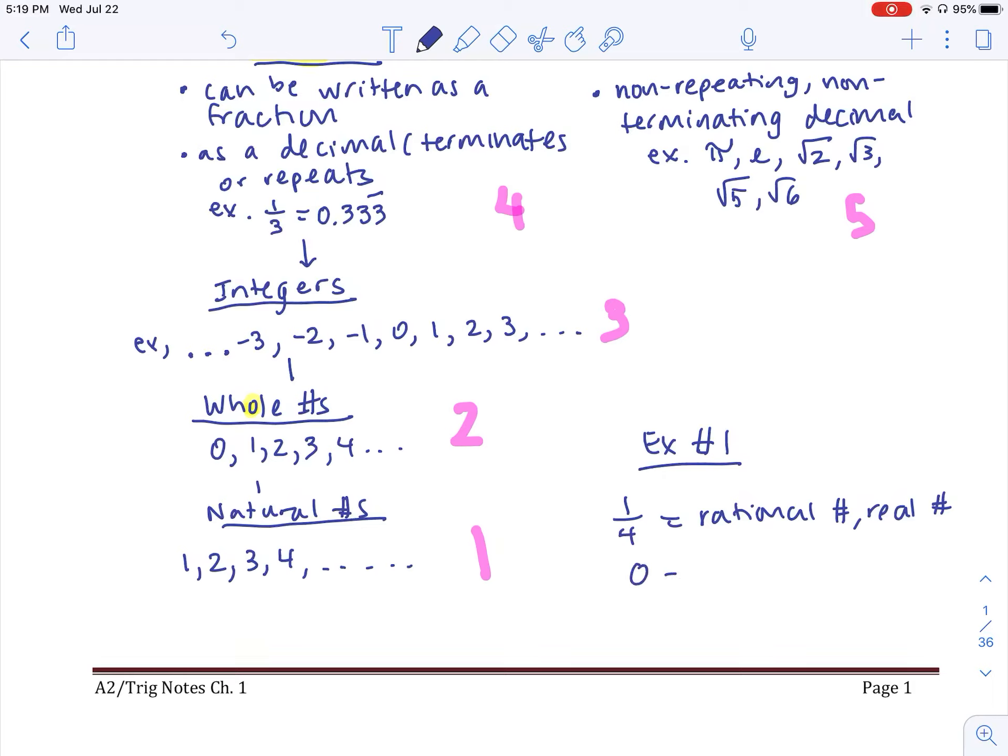So for example, what is zero? Zero for sure is a whole number. But because it's a whole number, it's also an integer, and we just kind of go up the chain of the tree that you see on the left. It's an integer, as well as a rational number, as well as a real number.